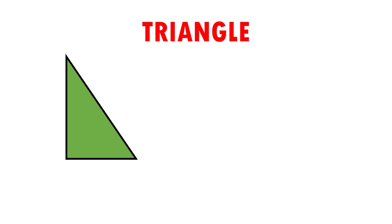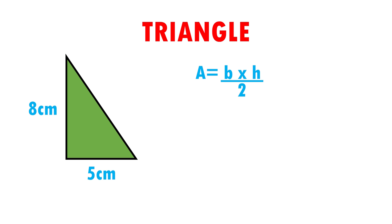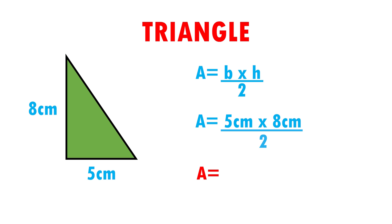Let's see an example. Here I have a triangle. Its base is 5 cm and its height is 8 cm. The formula to calculate the area of a triangle is: area is equal to base times height over 2. We are going to substitute data — this means that instead of the letters, I'm going to put their value. Area is equal to the base, which is 5 cm, times the height, which is 8 cm, over 2. When performing the operations, it gives us that area is equal to 5 times 8 is 40, divided by 2 is 20 cm squared.